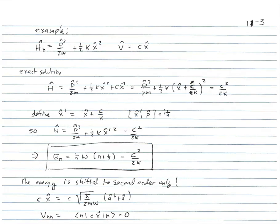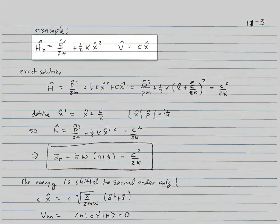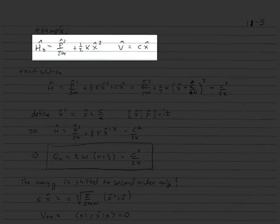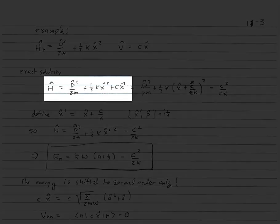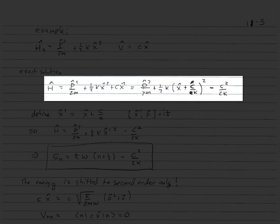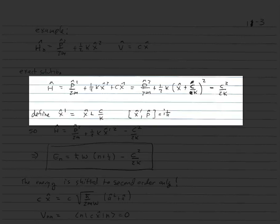Let's look at an example. We're done deriving the Wigner-Brillouin perturbation theory — it's fairly simple to derive. We're going to take our harmonic oscillator, P²/2M + ½KX², with perturbation V = CX̂. The exact solution is obtained by completing the square: H = P²/2M + ½K(X + C/K)² − C²/2K. We define a new operator X̂′ = X̂ + C/K, whose commutator with P gives iℏ.